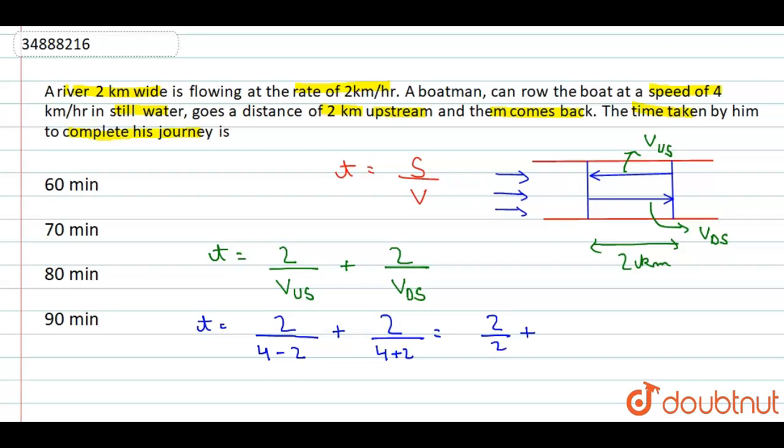This will be in hours. That will come out to be 1 plus 1 by 3 or 0.33 hours, that will be basically 20 minutes because in one hour there are 60 minutes. If I convert the time in minutes it will be 80 minutes. Then the answer will be C option. Thank you.